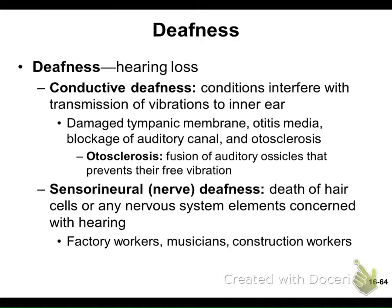In the order that we covered them: chapter 24 was water balance and electrolyte balance, chapter 12 was the axon and action potentials, chapter 14 was the brain and parts of the brain, sleeping and cranial nerves, and chapter 16 is the senses.